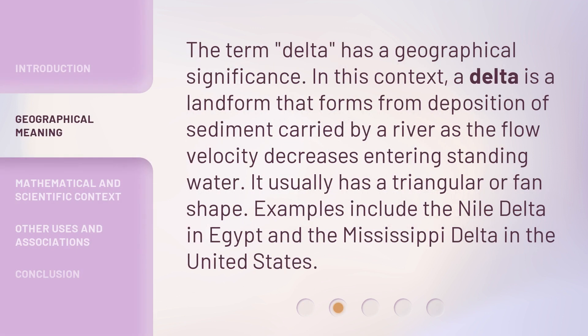The term Delta has a geographical significance. In this context, a Delta is a landform that forms from deposition of sediment carried by a river as the flow velocity decreases, entering standing water. It usually has a triangular or fan shape. Examples include the Nile Delta in Egypt and the Mississippi Delta in the United States.